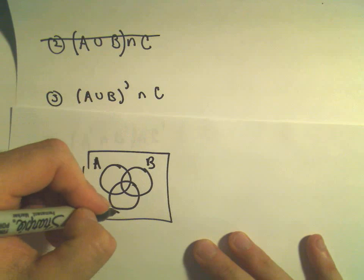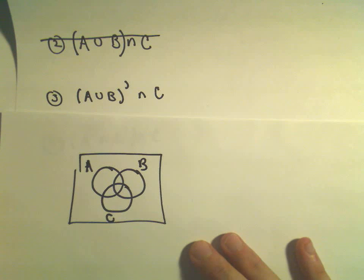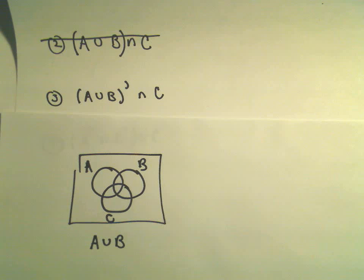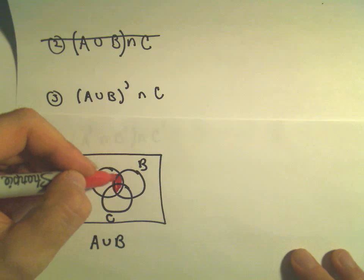So A, B, and C. And I'm going to kind of do this in three steps. If we do A union B, A or B, again, we said that's going to be everything inside of the circles A and B.